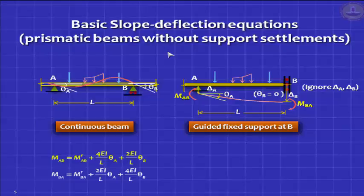And the slope deflection equations now modify to a very simple form. MAB is MFAB plus EI by L into theta A, and MBA is MFBA minus EI by L into theta A. We gave you several example problems yesterday.